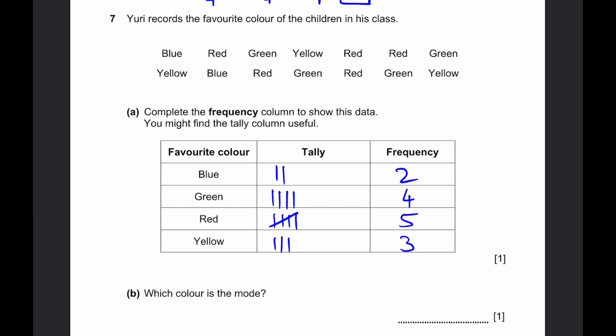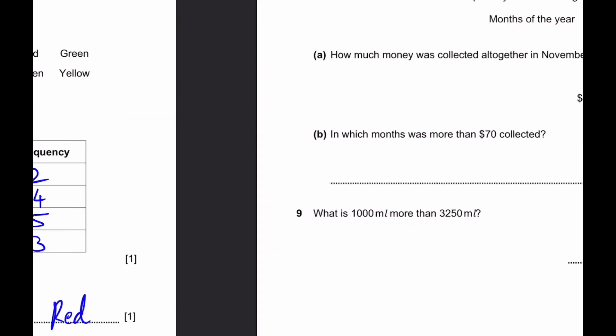Part B. Which color is the mode? The mode will be the one with highest frequency, which is 5 red in this case. So the answer is red. Let's go to question 8.